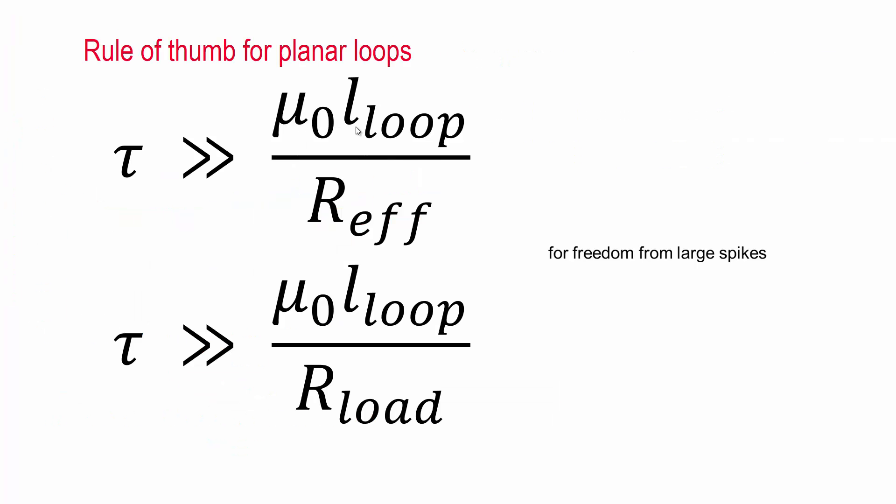Now, this parasitic inductance for a planar loop can be quite large. Obviously, this can be on order of millimeters. This is nanohenrys per millimeter. So this can be quite a large number. It can be several nanohenrys.